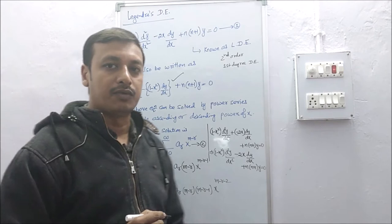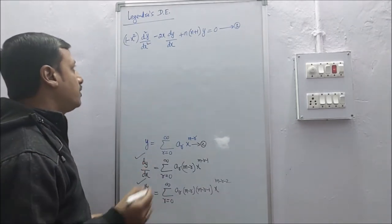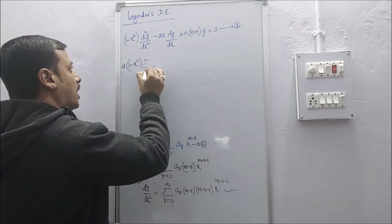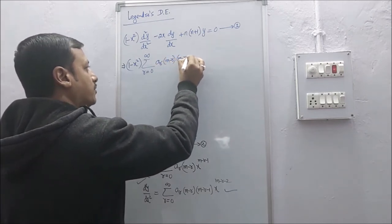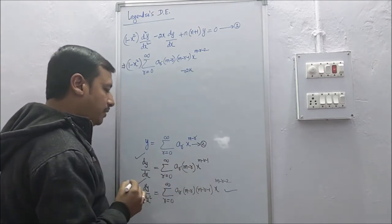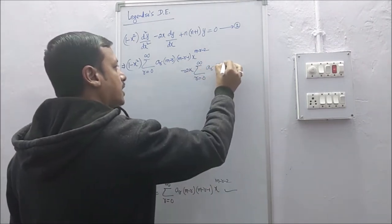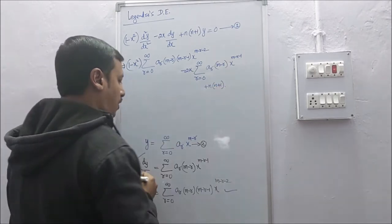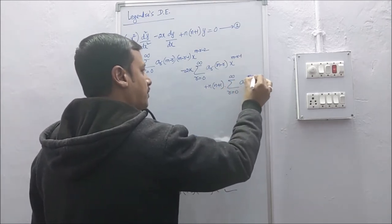We find y, dy/dx, and d²y/dx², then substitute these values into the equation. Substituting: 1 minus x² times [summation r=0 to infinity of a_r(m−r)(m−r−1) x^(m−r−2)] minus 2x times [summation r=0 to infinity of a_r(m−r) x^(m−r−1)] plus n(n+1) times [summation r=0 to infinity of a_r x^(m−r)] equals 0.